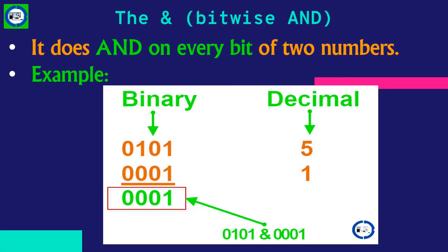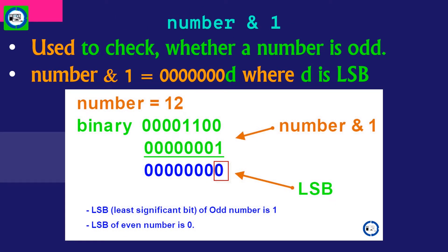The bitwise AND in C takes two numbers as operands and does AND on every bit of two numbers. The result of AND is one only if both bits are one. For example, the binary of decimal number five is given, and decimal one is written as 0 0 0 0 0 0 0 1 in binary form. When we do AND of these two numbers, the result is 0 0 0 0 0 0 0 1 in binary.